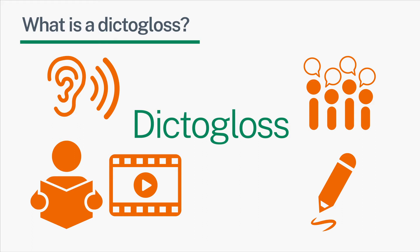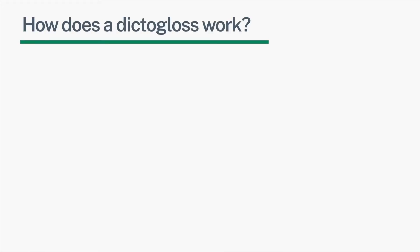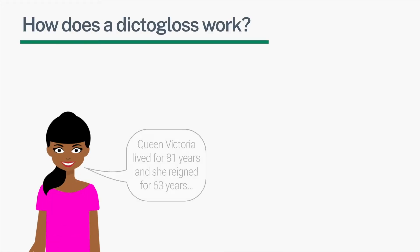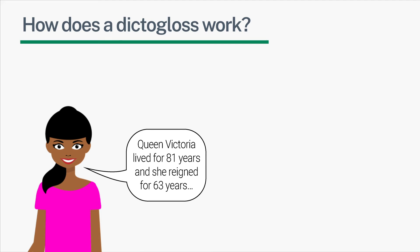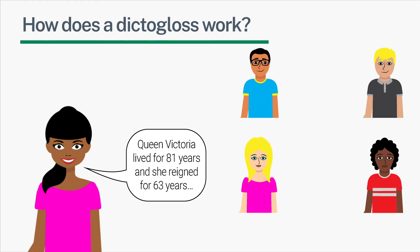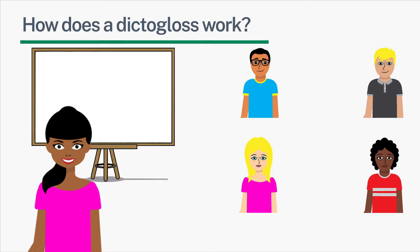Let's see how this works in stages. The teacher reads a short text at normal speed. The first time they hear it, the learners can either just listen or listen and take notes. Then the teacher writes any new subject vocabulary on the board to help support newer EAL learners and repeats the reading.